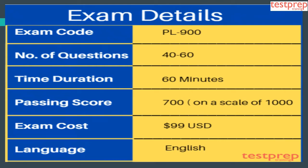Exam details: 1. Exam code is PL-900. 2. Number of questions are 40 to 60. 3. Time duration is 60 minutes. 4. Passing score is 700 on a scale of 1000. 5. Exam cost is 99 US dollars. 6. Language is English.